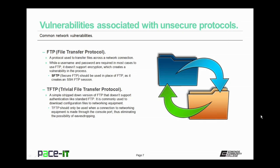Secure FTP, or SFTP, should be used in place of FTP as it creates an SSH FTP session. TFTP, or Trivial File Transfer Protocol, is a simple stripped-down version of FTP that doesn't support authentication like standard FTP, so it's even more unsecure. It is commonly used to download and upload configuration files for networking equipment. TFTP should only be used when a connection to networking equipment is made through the console port, thus eliminating the possibility of eavesdropping, and that console port should have its own security measures in place.